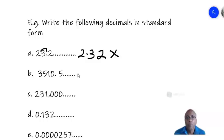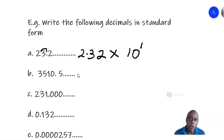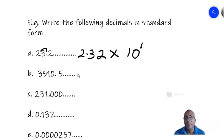Now, 2.32 must equal the original decimal. To get 23.2 back, you must bring the point forward one place, or multiply by 10. So that's times 10 to the power of one. The exponent is the same number of places you initially moved the point backwards. So 23.2 in standard form is 2.32 times 10 to the power of one.